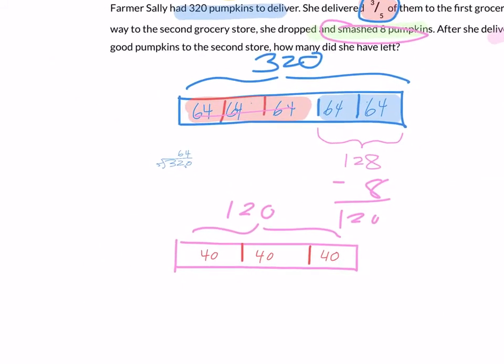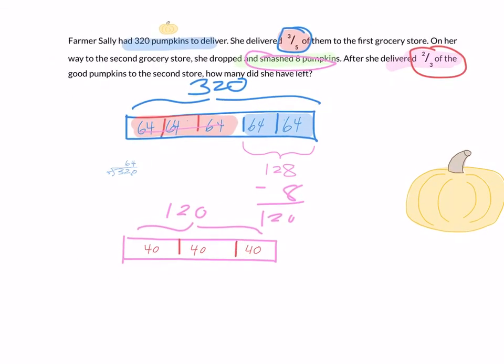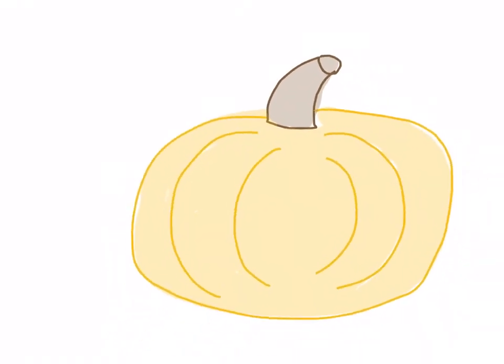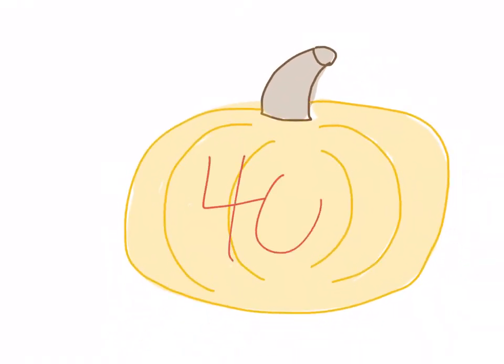Let's go back to the problem. She delivers two-thirds of them. So that means these are gone. They're gone. And what is left over? This is the leftover, and it means she's got 40 pumpkins left. Hooray!